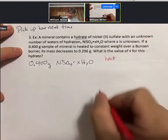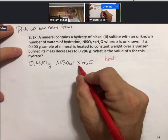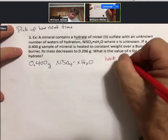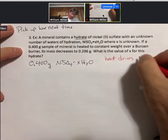What is the value of x for this hydrate? This is another version of an empirical formula problem. Let's pull some information out of this. We have 0.400 grams of nickel(II) sulfate hydrate.